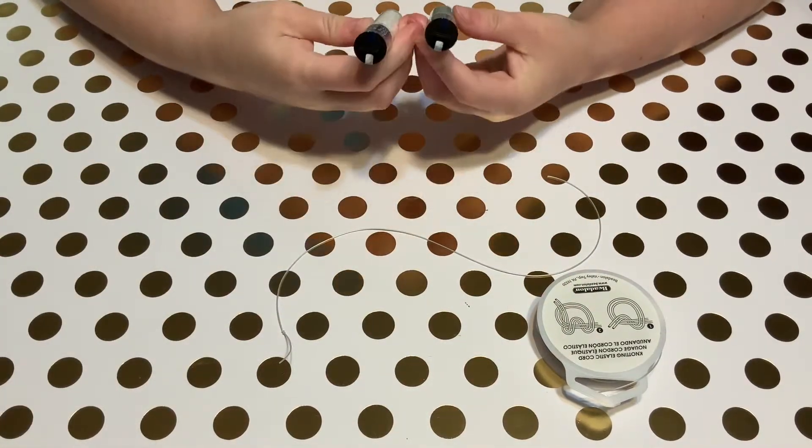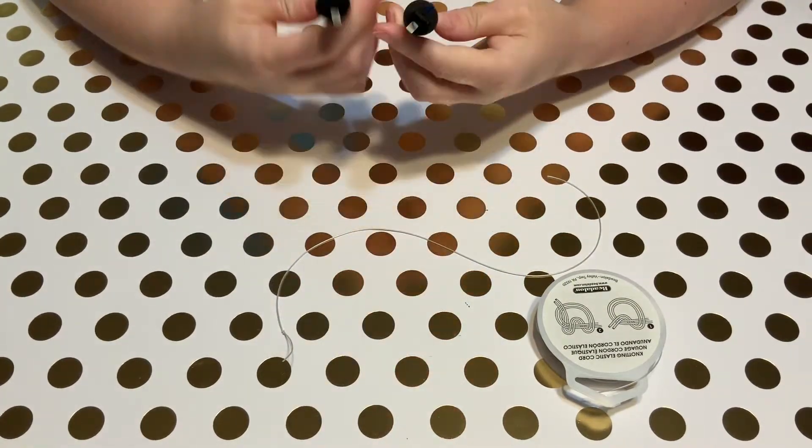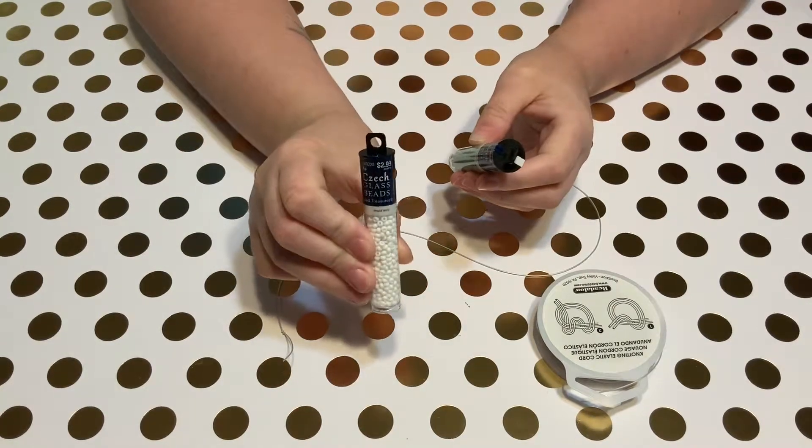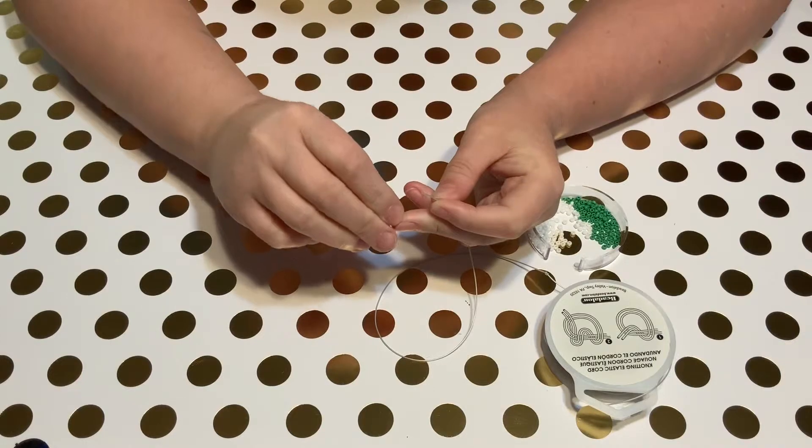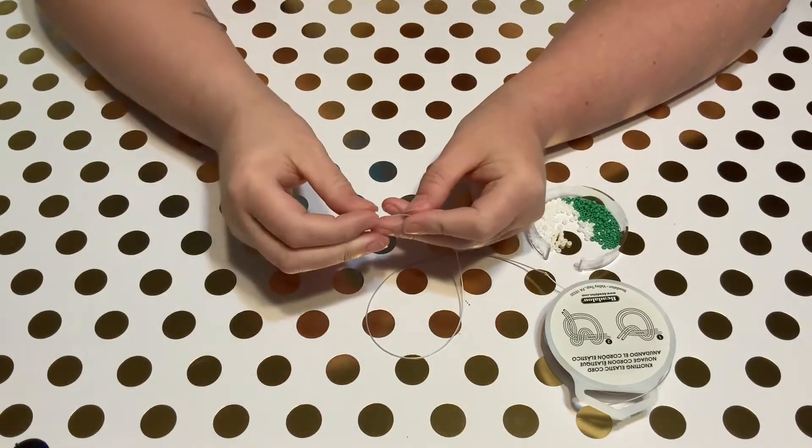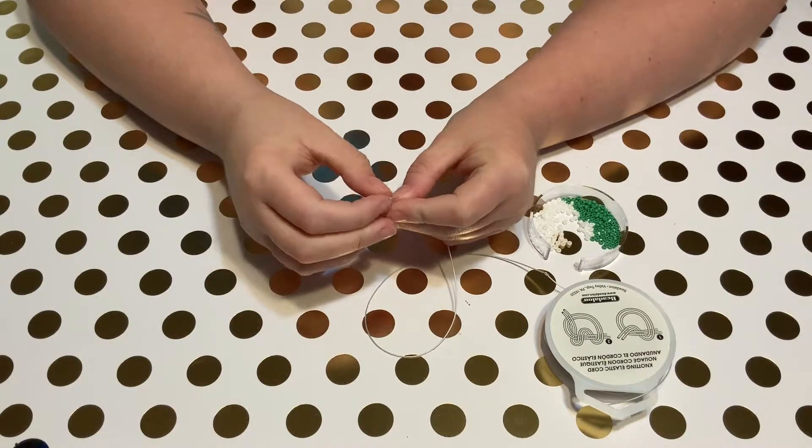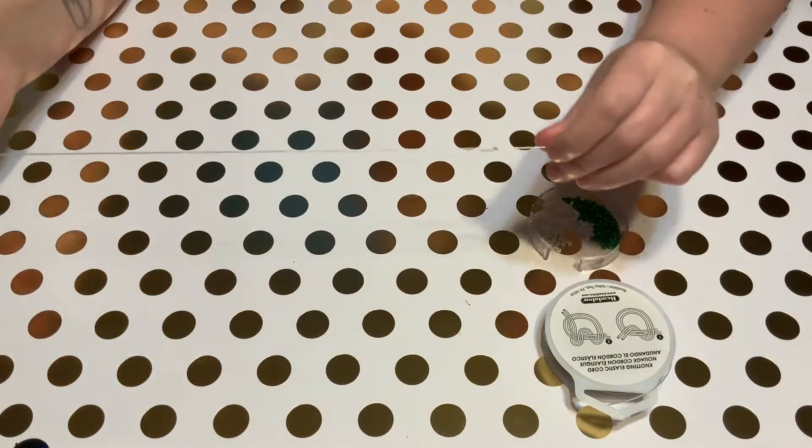The next step is to start adding the beads. I'm using green beads for the Morse code letters and white beads for the spacers. Both of my colors are in bead size 8. I'm starting the beading with a white spacer before I go into my colored letters. As the Morse code instructions say, the space between letters is three units so I'm using three white beads to start.